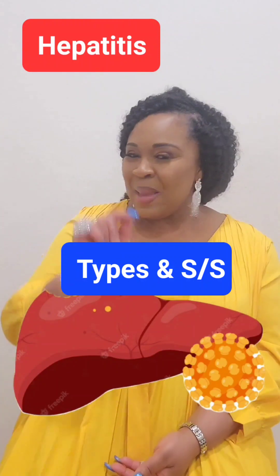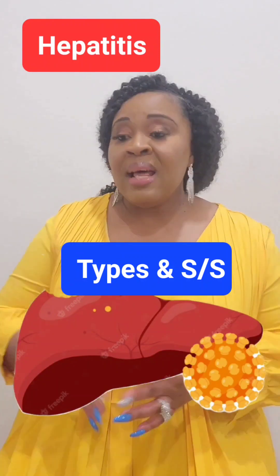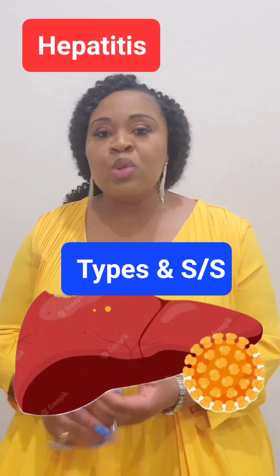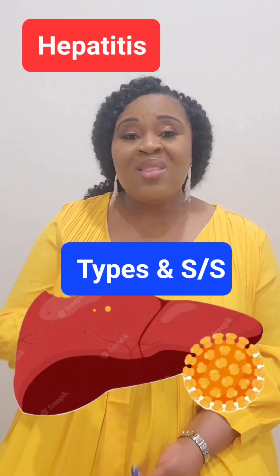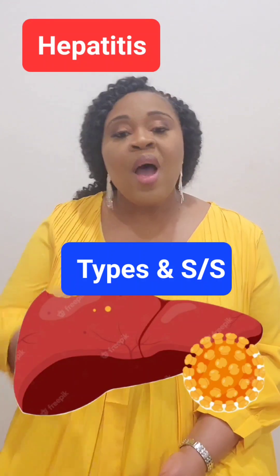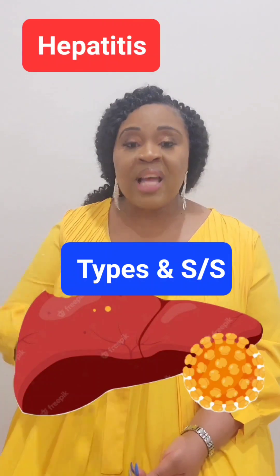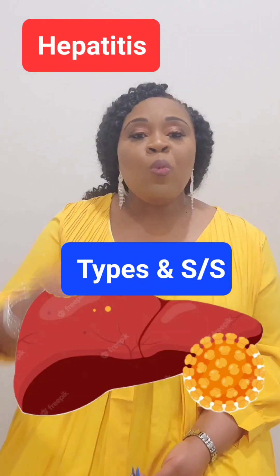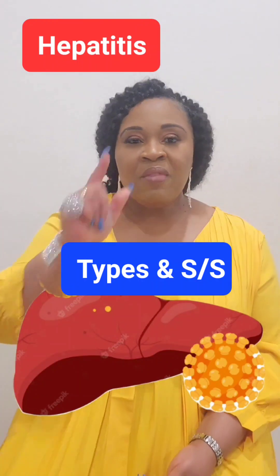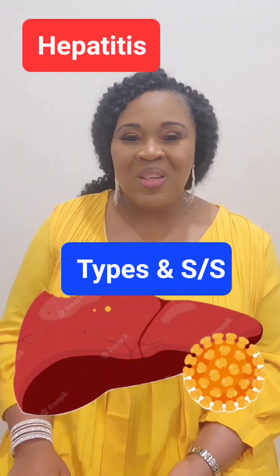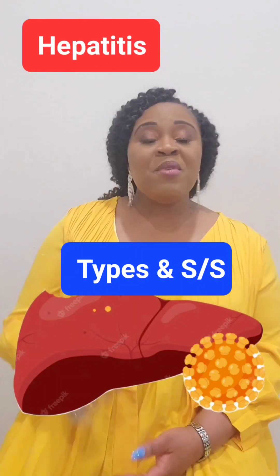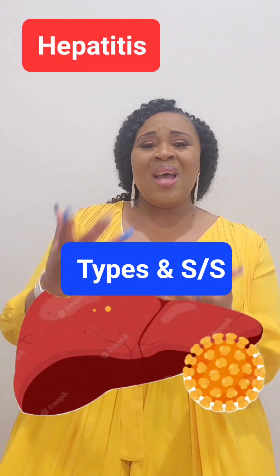So I know a lot of us, we hear hepatitis and we know what it is. But for the most part, the one that we know is hepatitis A, because that is the one that is most prevalent in some of our countries. But today I want us to talk about the different types of hepatitis, what causes it, and how we can know that we've got it. So what actually is hepatitis? Hepatitis is the inflammation of the liver. When the liver is inflamed, that means it has been invaded by a foreign object, a foreign particle, a foreign organism.